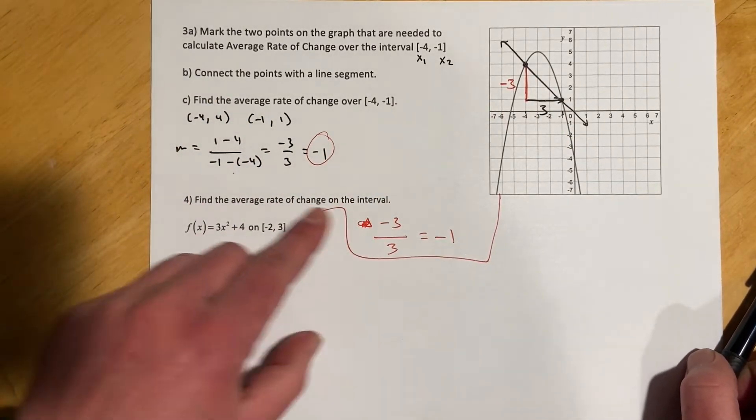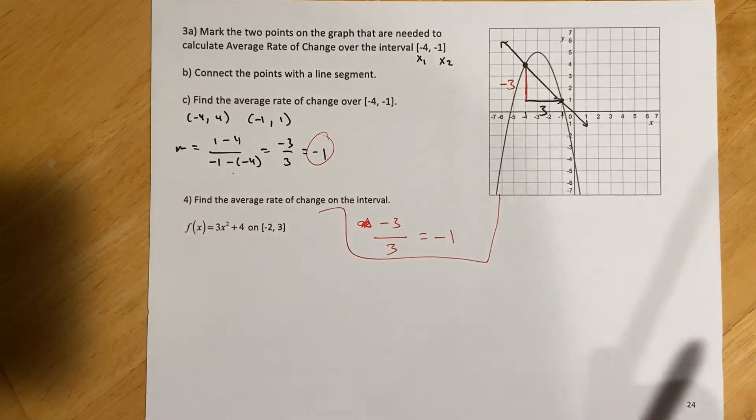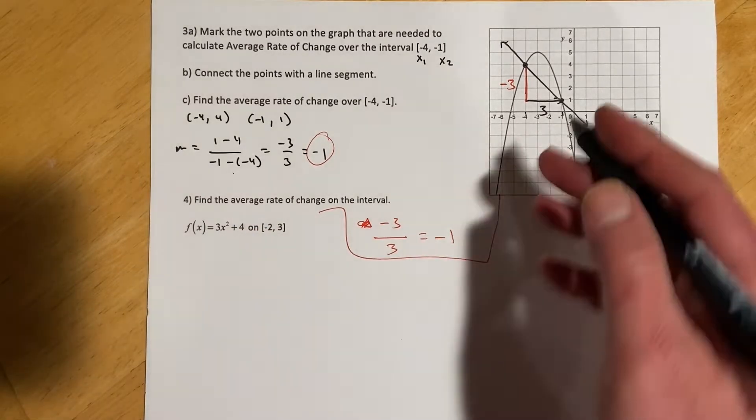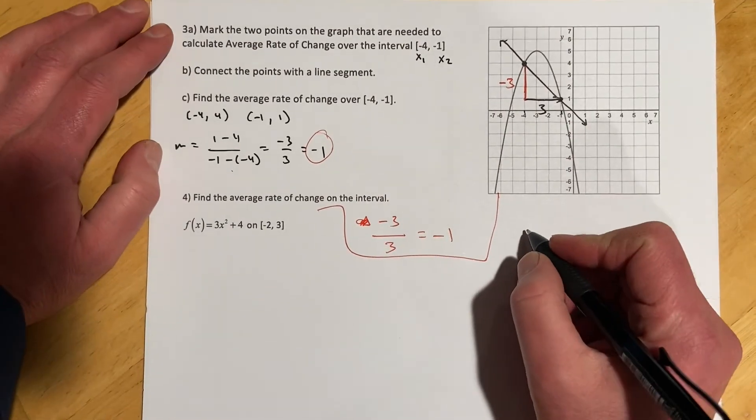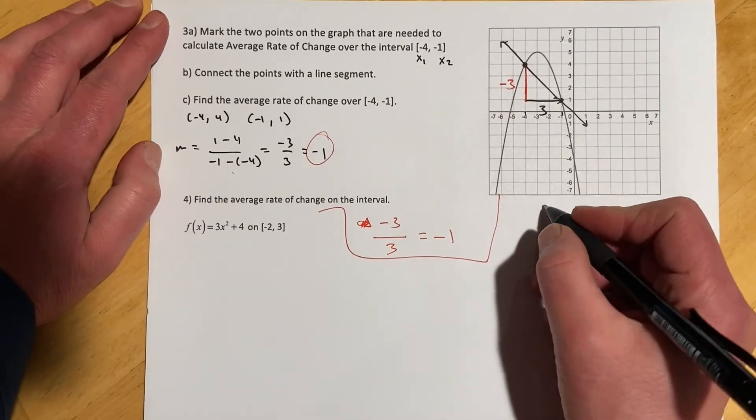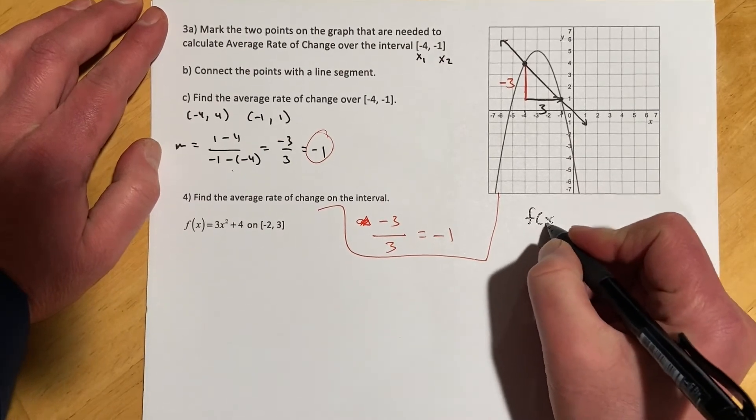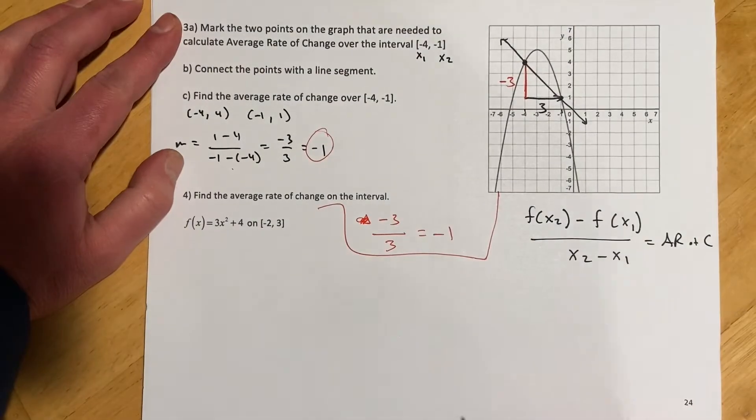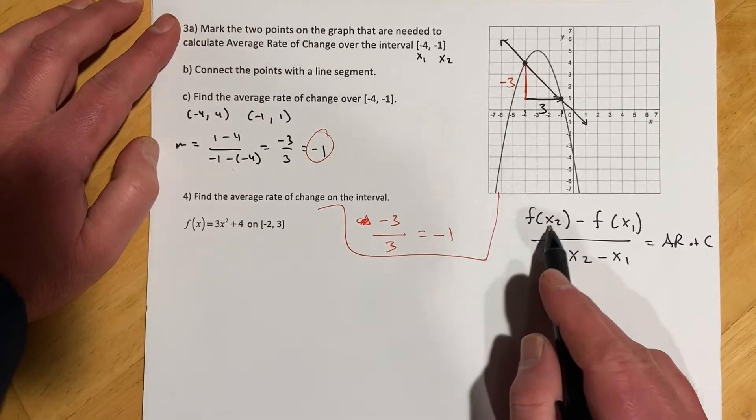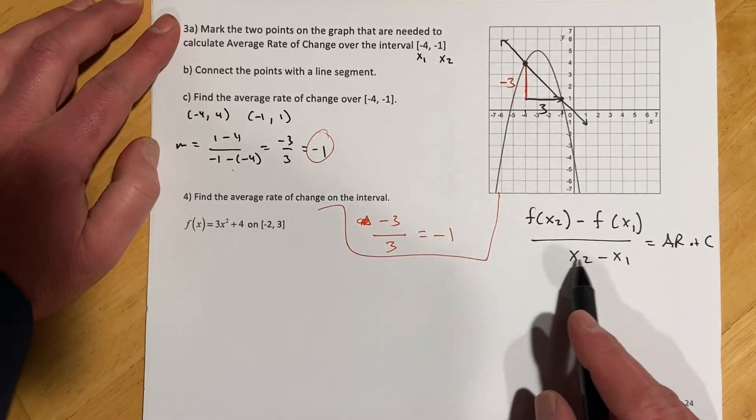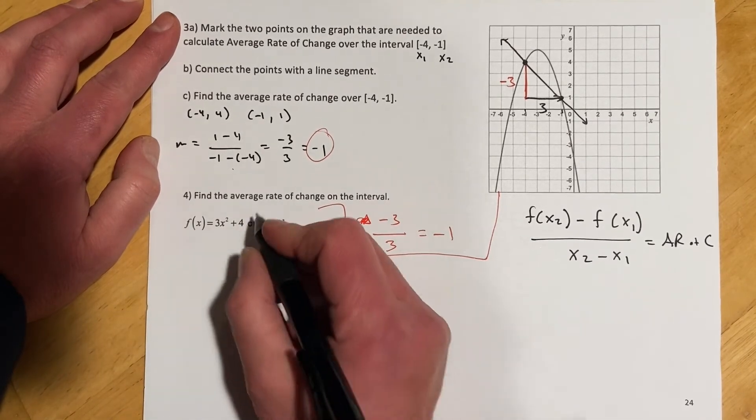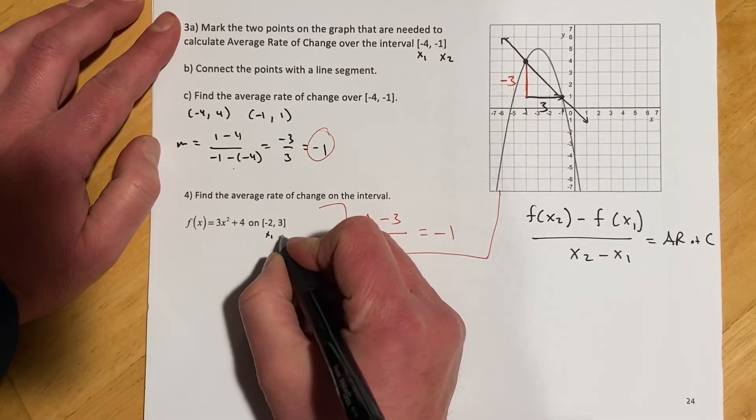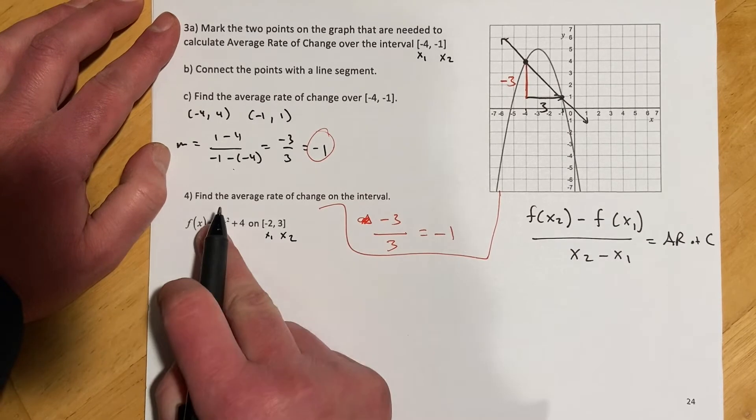This next one, we're supposed to find the average rate of change for this function on that interval. We don't have a picture to work off of this time, so this is where we're going to use that definition from the last page. I'll just jot it down right here. So it was f of x2 minus f of x1 over x2 minus x1. That's our average rate of change.